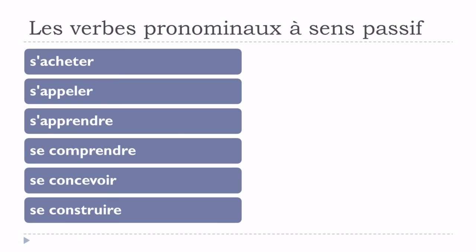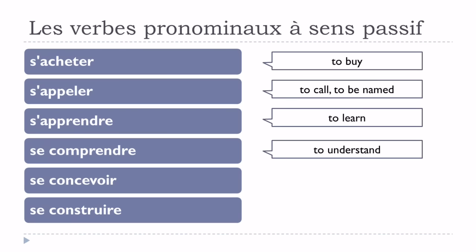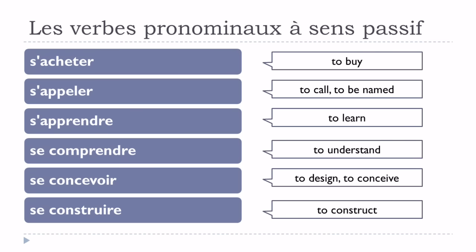Let's see the translations now. S'acheter — to be bought. S'appeler — to be called. S'apprendre — to be learned. All these verbs can be used as verbes pronominaux à sens passif.